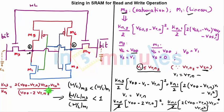And what do we know? W by L of M3 upon W by L of M1, we can write that mu n Cox. I beg your pardon, kn3 is nothing but mu n Cox W by L of M3, and kn1 is nothing but mu n Cox W by L of M1.